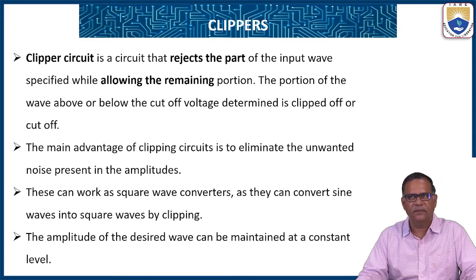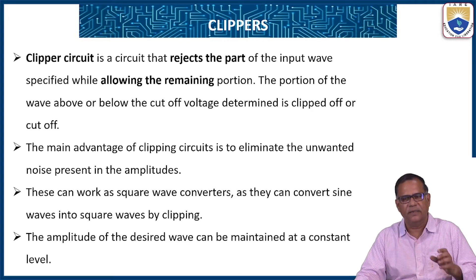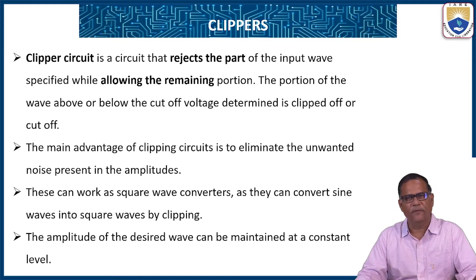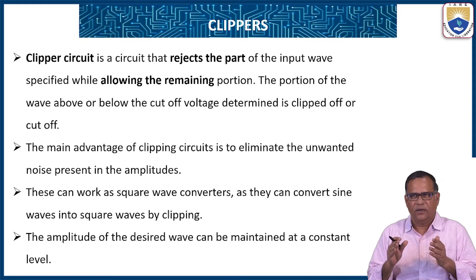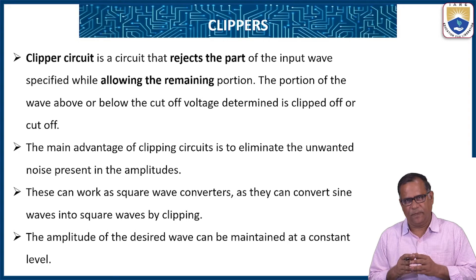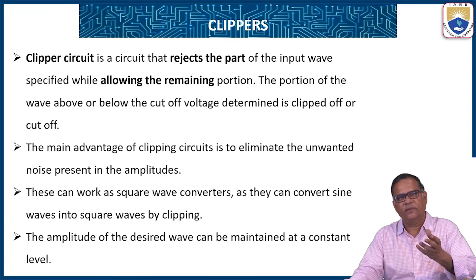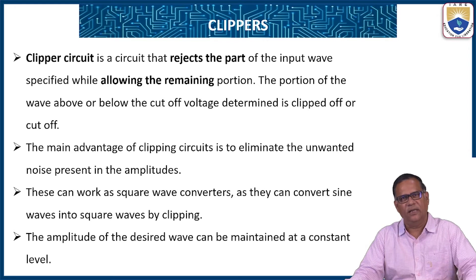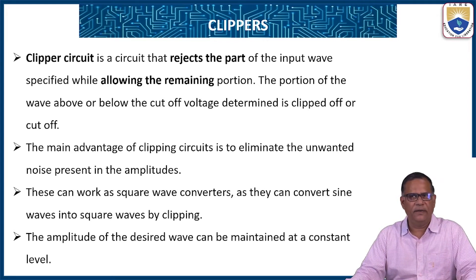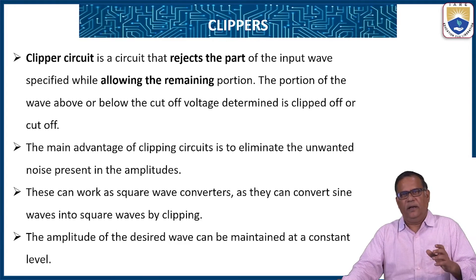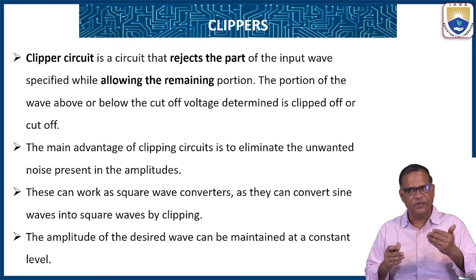The main advantage of clipping circuits is to eliminate the unwanted fluctuations or noise present in the signals. These clippers can work as square wave converters because they convert the sine wave into nearly square wave shapes by the clipping operation. The amplitude of the desired wave can be defined by changing the reference level.